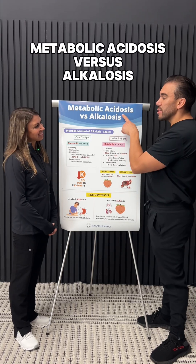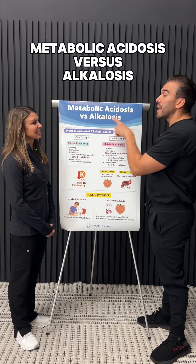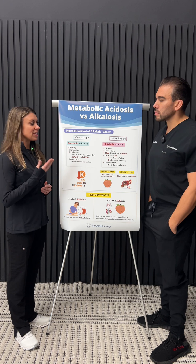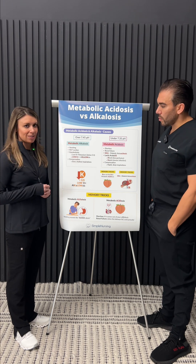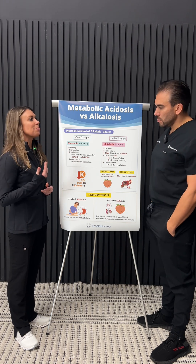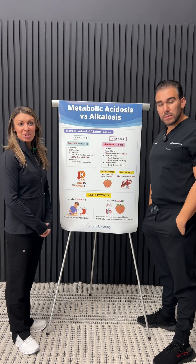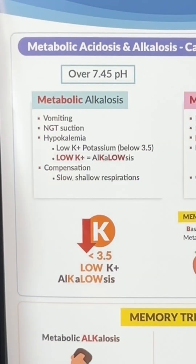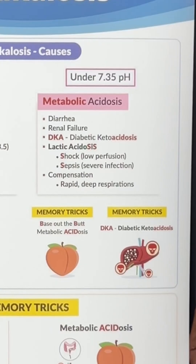Let's compare metabolic acidosis versus alkalosis. The first thing you want to look at is what's the pH doing. Think of it as pH is driving the bus. Anytime pH is over 7.45, whether it's respiratory or metabolic, then you're in alkalosis. If your pH is under 7.35, then you're in acidosis.